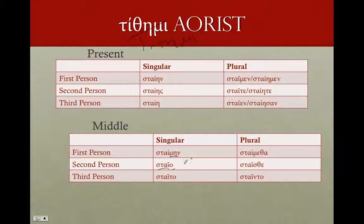The takeaway from all of this: know your endings. Know that there are two different versions of the present endings — the long version and the short version — and the short version is much more common. Remember to look for that iota — if you see that iota, you're most likely dealing with the optative.